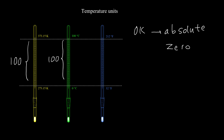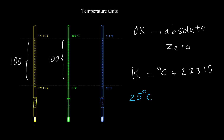Converting between Celsius and Kelvin is very easy. To calculate Kelvin, just add 273.15 to the Celsius temperature. In most calculations we ignore the 0.15. For example, to convert 25°C to Kelvin: 25 + 273 = 298 Kelvin.